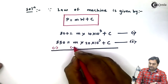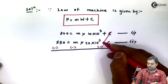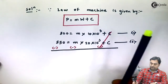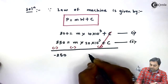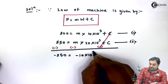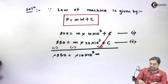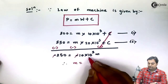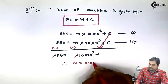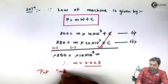Subtracting Equation 1 from Equation 2 to eliminate C: the C terms cancel, giving −550 + 300 = −250 equals −m × (10 × 10³). The negative signs cancel from both sides, so m = 250 ÷ (10 × 10³), which gives m = 0.025.